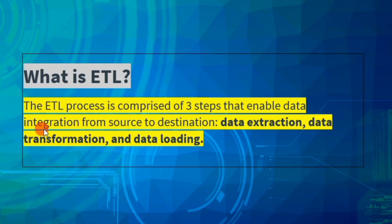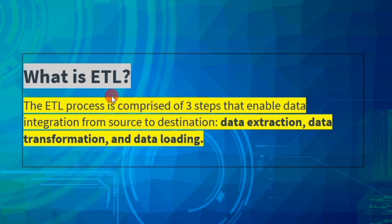The ETL process is comprised of three steps that enable data integration from source to destination. ETL: E for Extraction, T for Transformation, L for Loading.